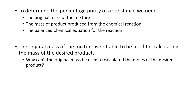To determine the percentage purity of a substance, we need: the original mass of the mixture, the mass of the product produced from the chemical reaction, and a balanced chemical equation. The original mass of the mixture cannot be used for calculating the mass of the desired reactant.